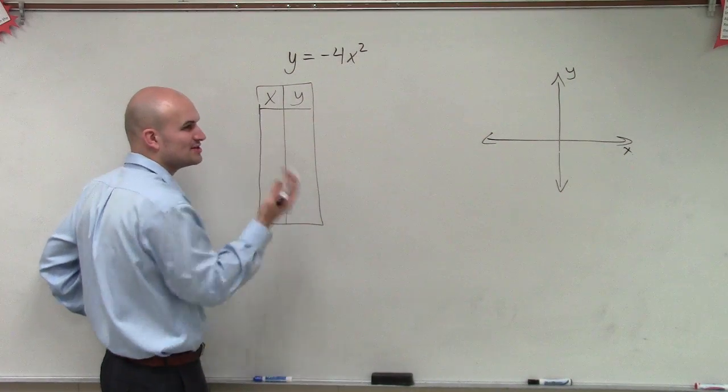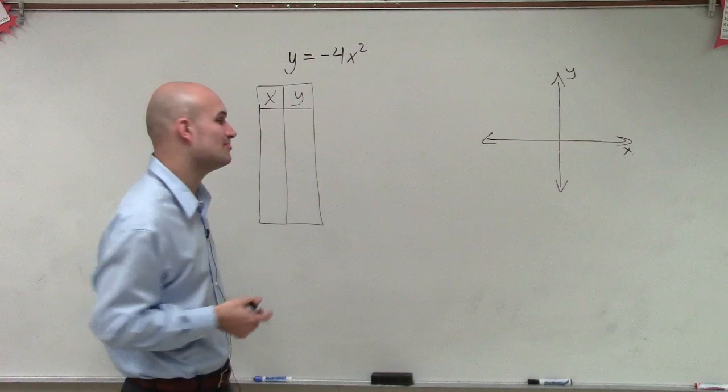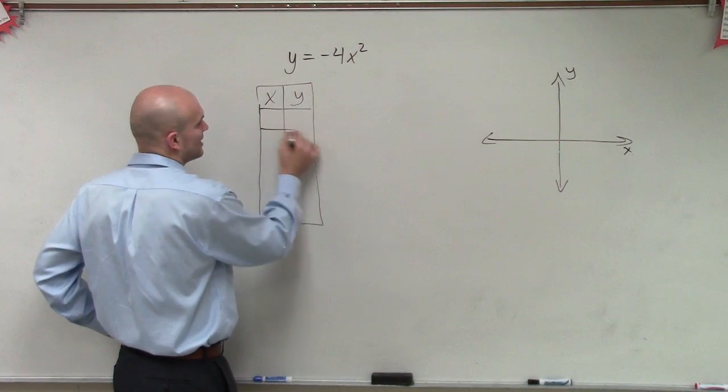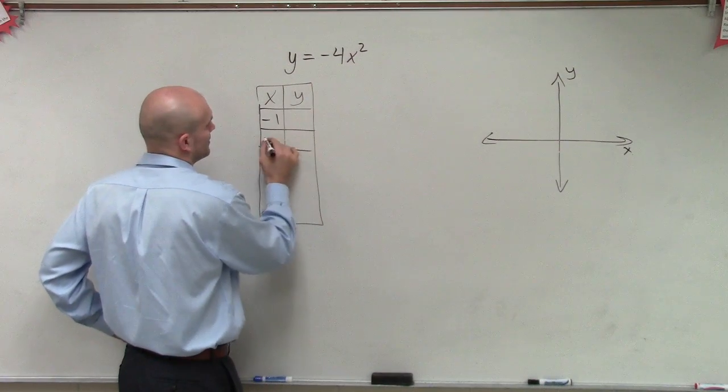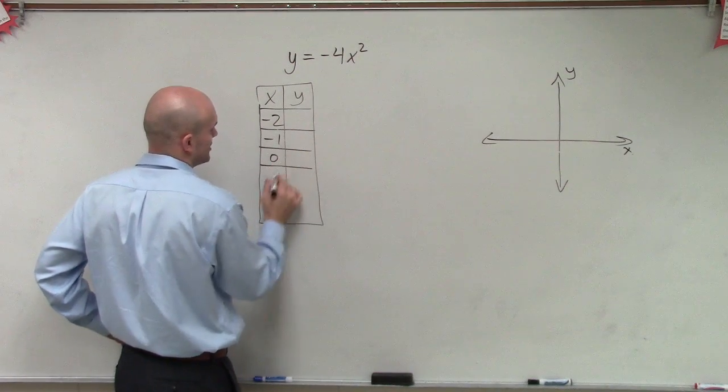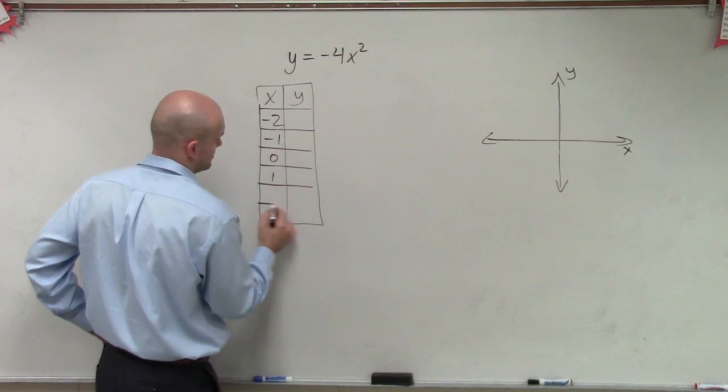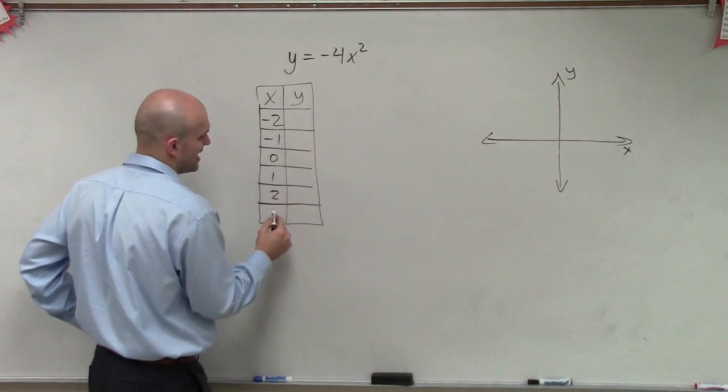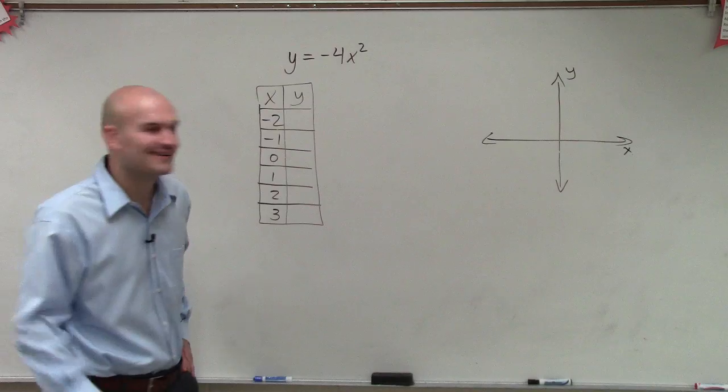And usually the coordinate points, you want to pick some very basic and easy points to pick. So let's just kind of pick negative 2, negative 1, 0, 1, 2, and let's just pick 3. Why not, right?